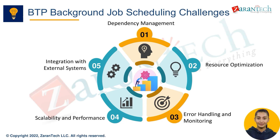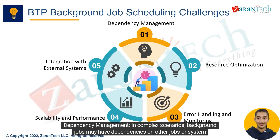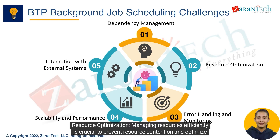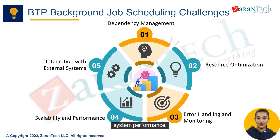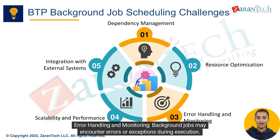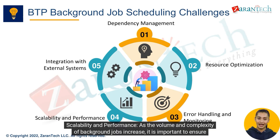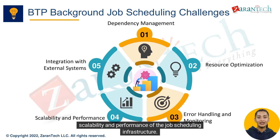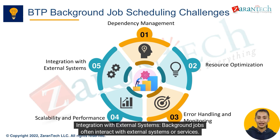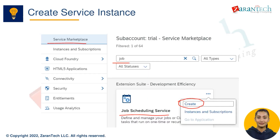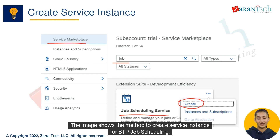Some of these challenges include: dependency management — in complex scenarios, background jobs may have dependencies on other jobs or system events; resource optimization — managing resources efficiently is crucial to prevent resource contention and optimize system performance; error handling and monitoring — background jobs may encounter errors or exceptions during execution; scalability and performance — as the volume and complexity of background jobs increase, it is important to ensure scalability; and integration with external systems — background jobs often interact with external systems or services.